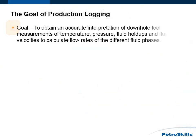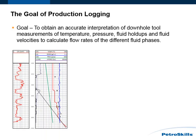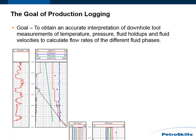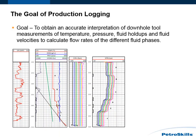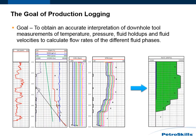The goal of production logging is to obtain an accurate interpretation of downhole tool measurements of temperature, pressure, fluid holdups and fluid velocities to calculate flow rates of the different fluid phases. Before embarking on two-phase flow interpretation, one first needs to understand single-phase flow. Achieving this goal requires understanding how temperature and single-element spinner tools operate and what measurements they provide.